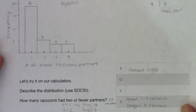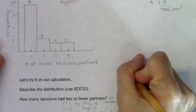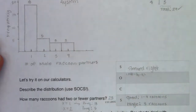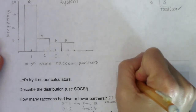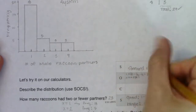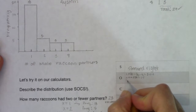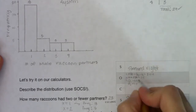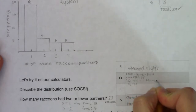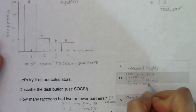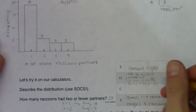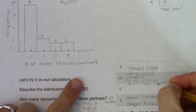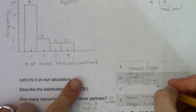Here come all my data values. I've got Q1 = 1 and Q3 = 2, so let's build the safety zone. IQR is Q3 minus Q1: 2 minus 1 = 1. Then 1.5 times 1 = 1.5. Safety zone: Q1 minus 1.5 and Q3 plus 1.5. So 1 minus 1.5 = negative 0.5, and 2 plus 1.5 = 3.5. Safety zone is from negative 0.5 to 3.5. Values 1, 2, and 3 are in the safety zone, but 4 is outside — so the data value of 4 raccoons is an outlier.